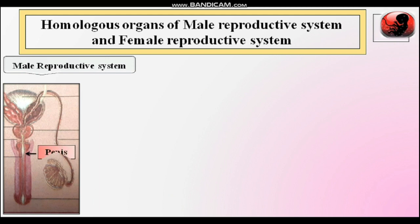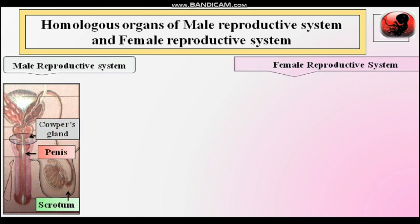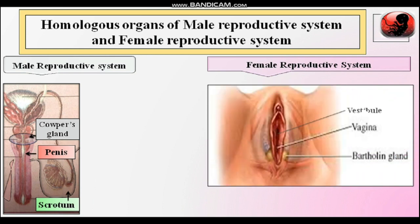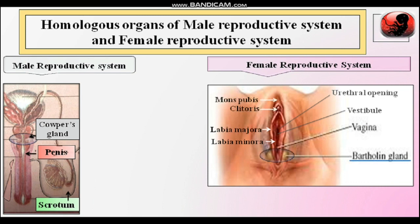Now, homologous organs of the male and female reproductive systems. What is the meaning of homologous? The organs which are similar in structure — made up of similar tissue — are called homologous organs. The organs of the male reproductive system: penis, scrotum, and Cowper's glands — these three parts are homologous to some parts of the female reproductive system, which include: vestibule, vaginal opening, Bartholin's glands, urethral opening, labia minora, labia majora, clitoris, and mons pubis.